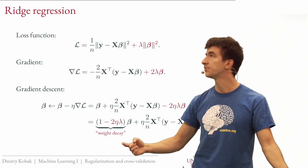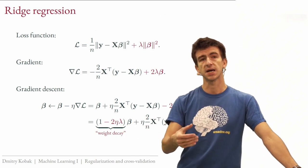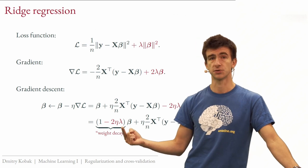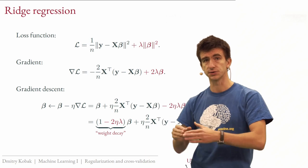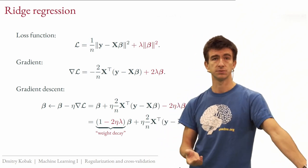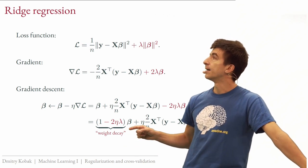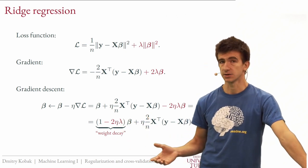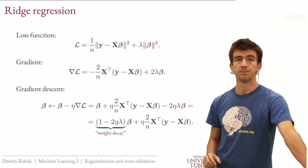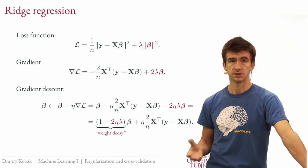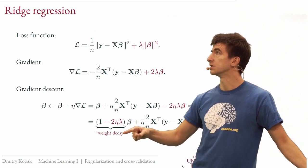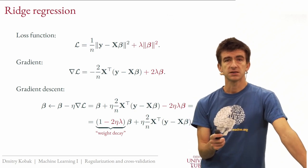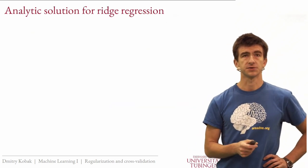This will balance out and converge to your beta-hat ridge solution. In the neural network community this is called weight decay — they don't call it ridge, but it's the same thing. The terminology comes from the fact that the weights are decaying a little bit on each step.